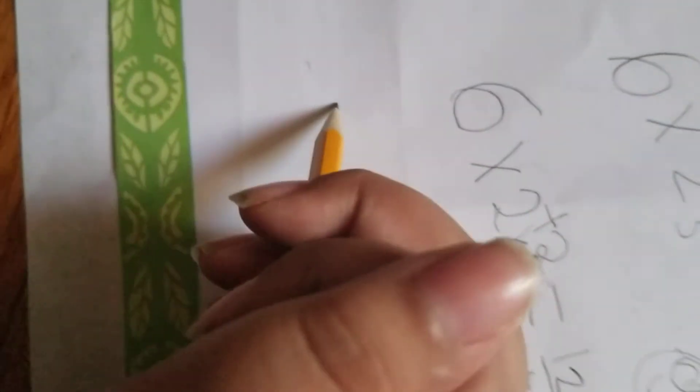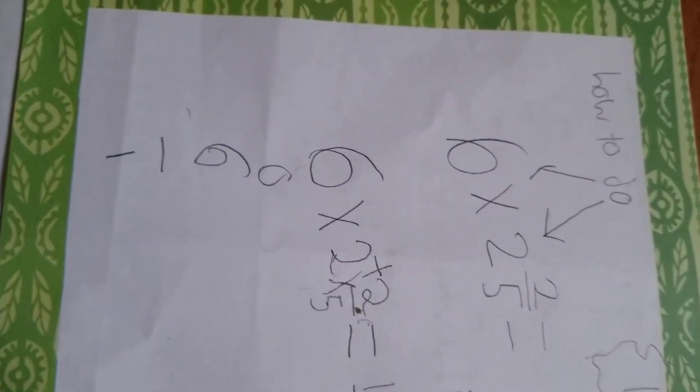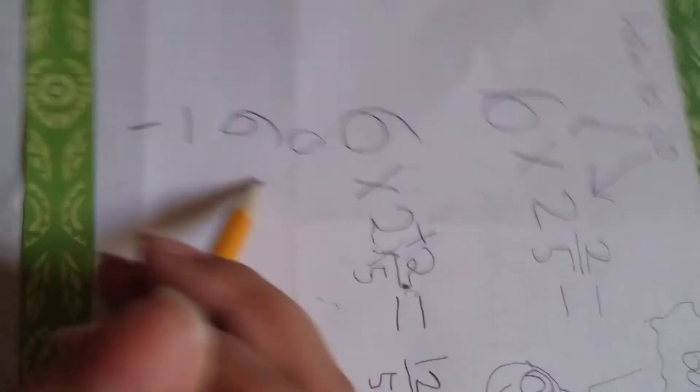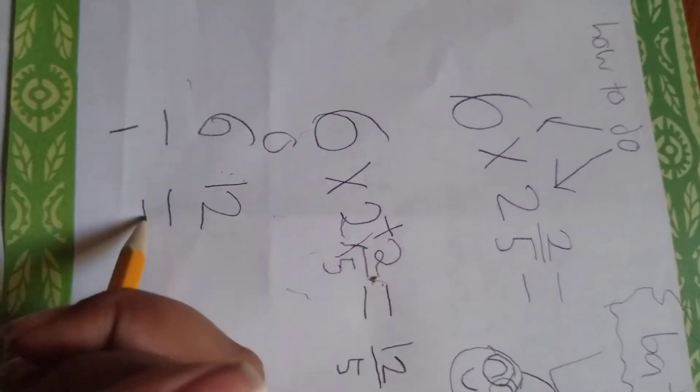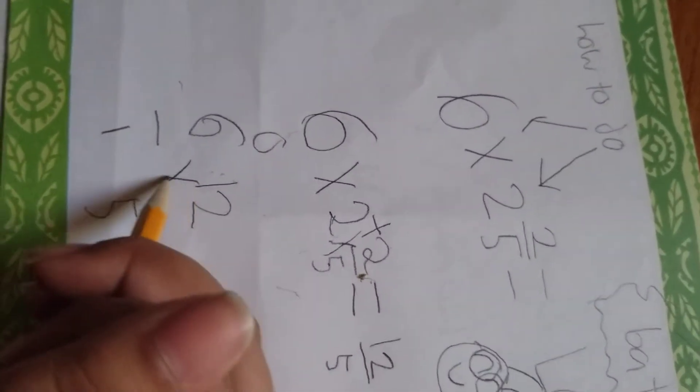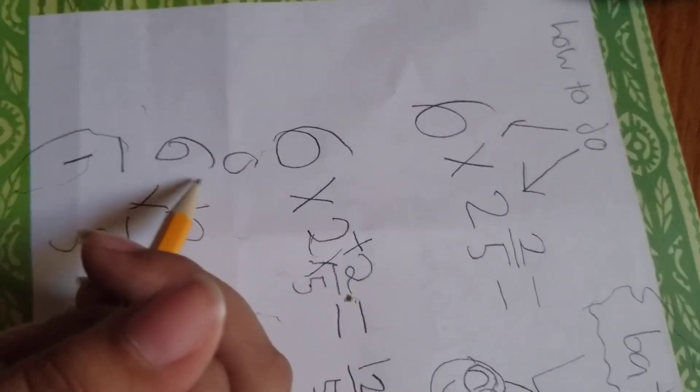And now for the six, since there's nothing there, you have to put six over one times twelve-fifths. You have to put a one there because if you try to just multiply with this without it, it's gonna be super wrong.